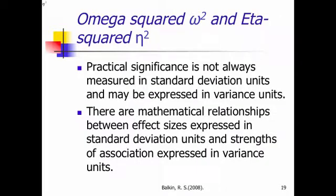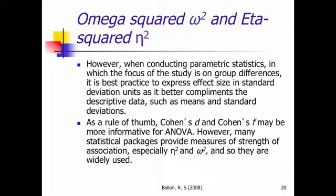Practical significance is not always measured in standard deviation units. It's more commonly expressed in variance units. And there are mathematical relationships between effect sizes expressed in standard deviation units and strength of association expressed in variance units. SPSS will do this for you, by the way. So it's always best practice, in my opinion, to express effect size in standard deviation units, as it better complements the descriptive data. I think that Cohen's D and Cohen's F are more informative for ANOVA. However, most statistical packages provide a measure of strength of association using eta squared, so they're much more widely used because they don't require calculation on the part of the user. The computer does it for you.